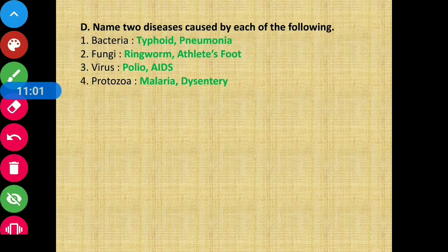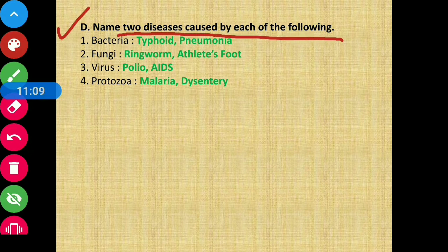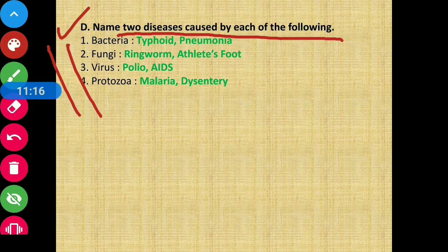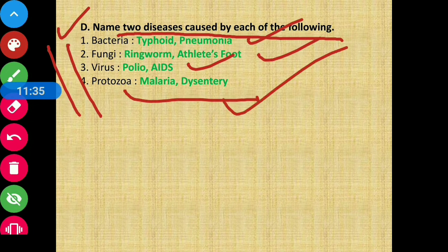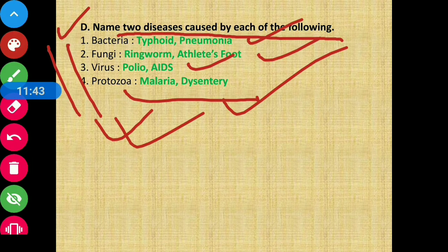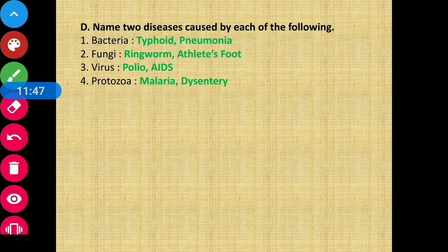Section D: Write two diseases caused by each of the following microbes. Bacteria — typhoid and pneumonia. Fungi — ringworm and athlete's foot. Virus — polio and AIDS. Protozoa — malaria and dysentery. These are the names of two diseases caused by each of these microbes. This marks the ending of this chapter. In our next video we will come up with another chapter of Class 4. Till then, stay tuned and thank you.